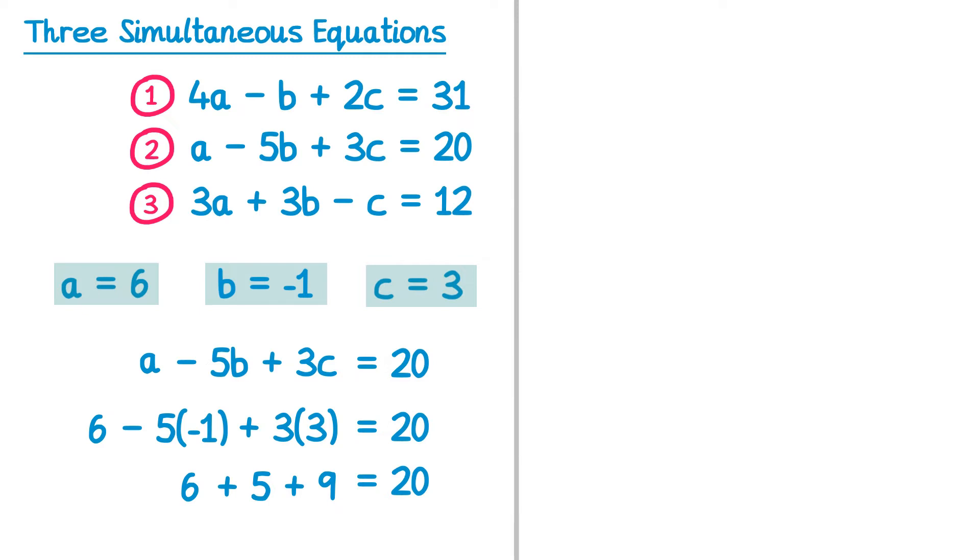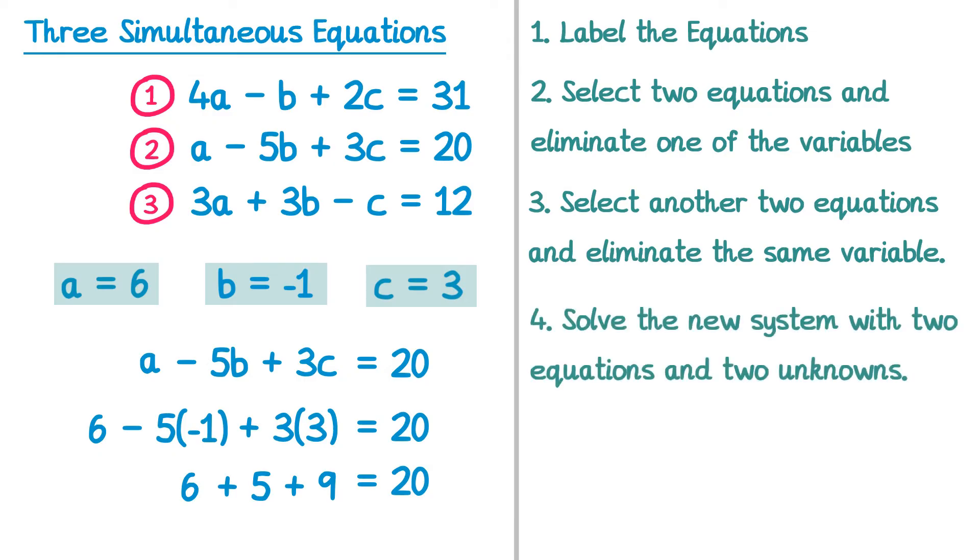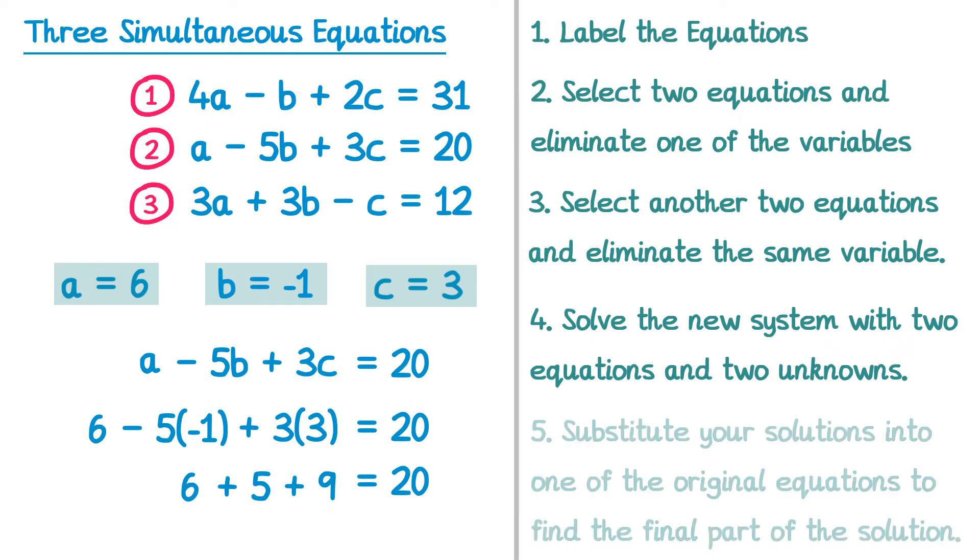We did quite a lot there, so let's write down the steps. Well the first thing we did was we labelled the equations 1, 2 and 3. Then we selected two of the equations and eliminated one of the variables. Remember I eliminated a. Then we select another two equations, so a different pair, and eliminate the same variable. Then we solved the new system we had to find two parts of the solution, so we found b and c, and then we substituted those parts back into one of the original equations to find the final part of the solution. Now it doesn't matter which pair of equations you select, it doesn't even matter which variable you eliminate first. As long as you follow these steps you'll get to the right solution.